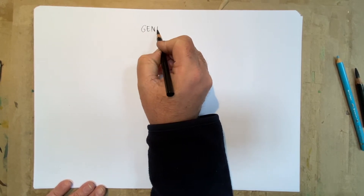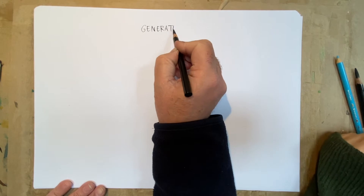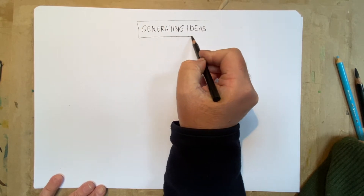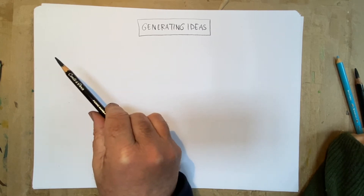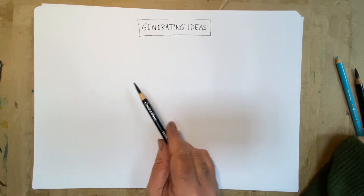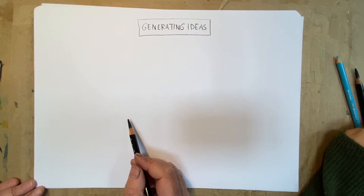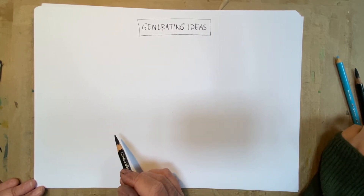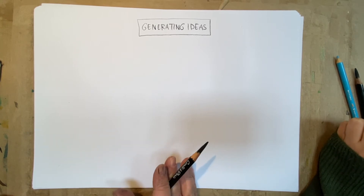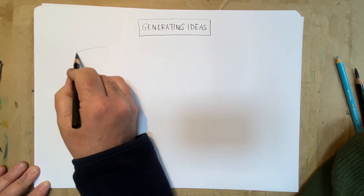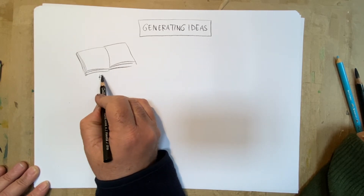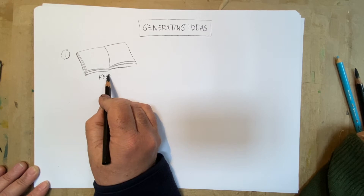I'm calling this tutorial 'Generating Ideas,' and I think this is one of the most general but also very specific topics we face as illustrators all the time. I'm often asked where I get my ideas from — it's one of those really open-ended questions. I've got four tips for generating ideas; some are quite simple, some quite mechanical. The first one — and you should know this because I bang on about it all the time — is keep a sketchbook.